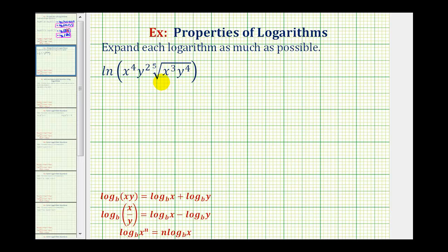To demonstrate the property of logarithms, we're asked to expand this logarithm as much as possible. We have natural log of x to the fourth, y to the second, times the fifth root of x to the third, y to the fourth.